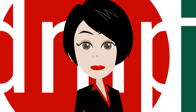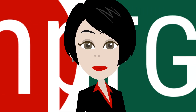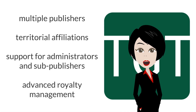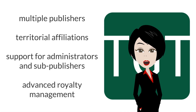The simplest solution is to upgrade to that green thing — its large commercial sibling. Made by the same people as DMP, it has many additional features. Most notably: multiple publishers, territorial affiliations, support for administrators and sub-publishers, and advanced royalty management.